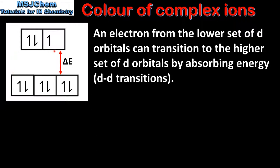An important point to note is that transition elements have an incomplete d sublevel. In this example, the copper 2 ion has one 3d orbital which only contains one electron. Because of this half-filled d orbital, an electron from the lower set of d orbitals can transition to the higher set of d orbitals by absorbing energy. These are known as d to d transitions.